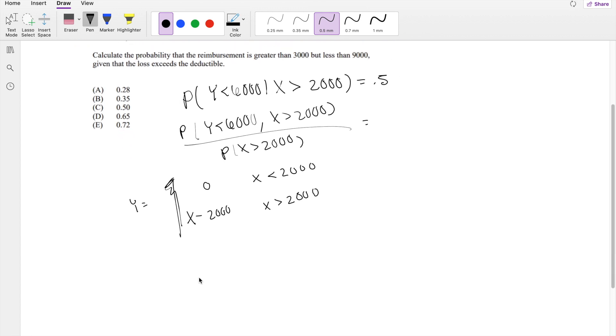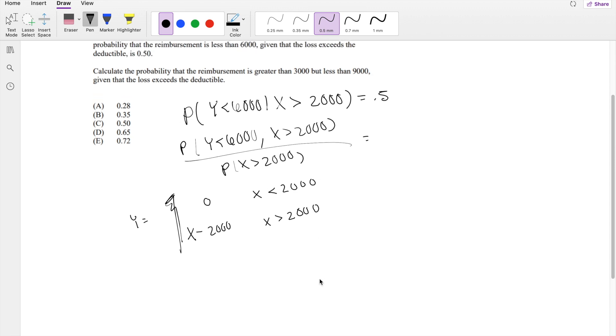So knowing that, when they ask you what is the probability that Y is greater than 6,000 given that X is greater than 2,000, we can actually just substitute this thing in there. So we know Y is equal to X minus 2,000 is less than 6,000.